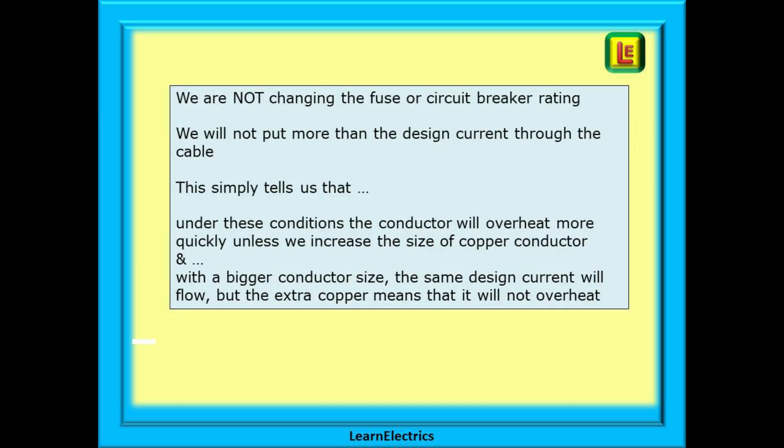You must understand that we are not changing the fuse or circuit breaker rating. And we will not put more than the design current through the cable. It simply tells us that, under certain conditions, the conductor will overheat more quickly unless we increase the size of copper conductor. And with the bigger conductor size, the same design current will flow, but the extra copper means that it will not overheat. It is still the same 4kW load, the same 17.3 amps of design current, and the same fuse rating of 20 amps. We are just going to use bigger cable, and these calculations tell us how big the cable should be.